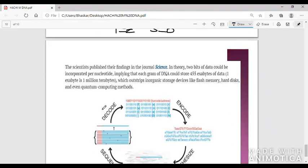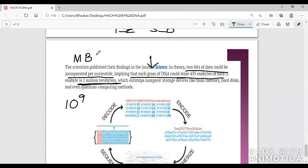Scientists have published their findings in the journal of Science. In theory, two bits of data could be incorporated per nucleotide. You can use it in computer science, implying each gram of DNA could store 455 exabytes. One exabyte is 1 million terabytes. One million is 10 to the power 6, billion is 10 to the power 9, and trillion is 10 to the power 12.